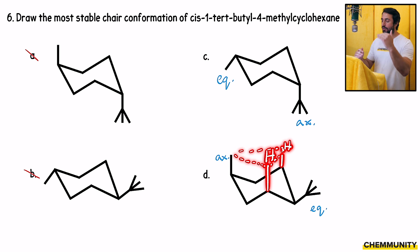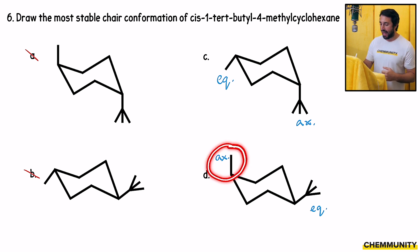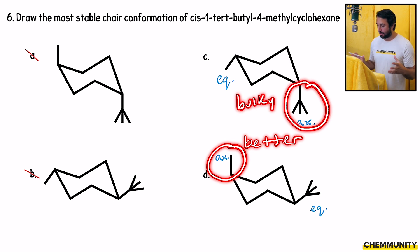The less steric hindrance there is, the lower the energy will be for that conformation and the more stable it will be. The one that will be more favorable will be the less bulky group in the axial position. So here we have a methyl group axial. That is better than having the tert-butyl axial. The tert-butyl group is much, much bulkier. So there will be a lot more steric repulsion with those diaxial interactions with the protons there.